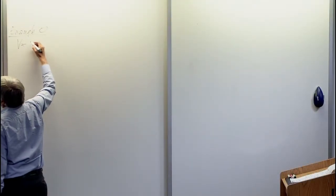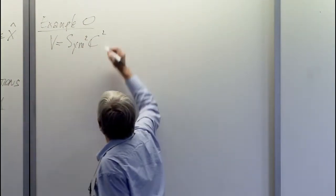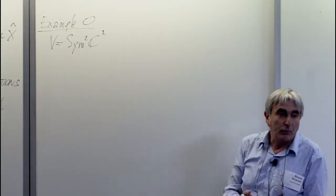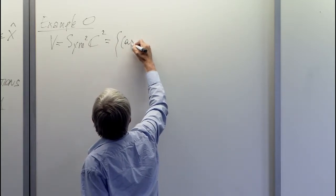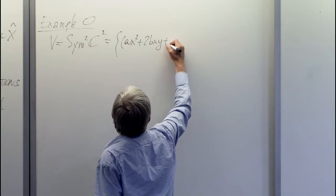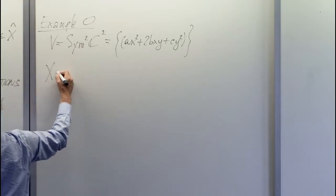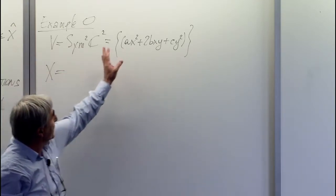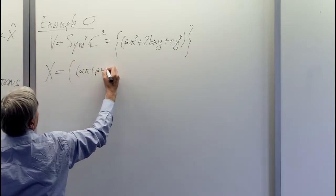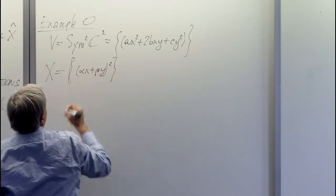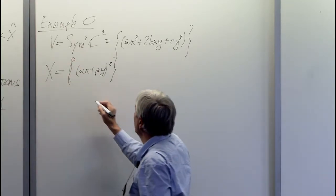In Example 0, I take V equal to the quadratic forms in two variables: Ax² + 2bxy + cy². If you think of these as 2×2 matrices, the rank-1 matrices are just the particular polynomials which are squares. You can draw a picture: X is just a conic.